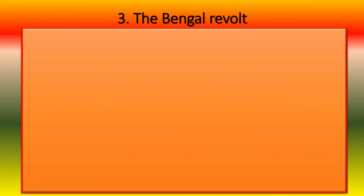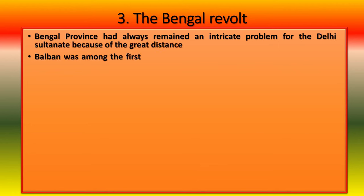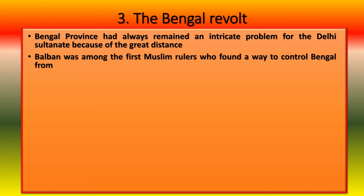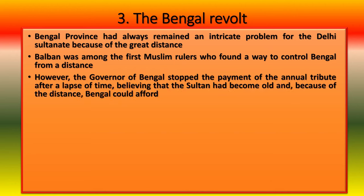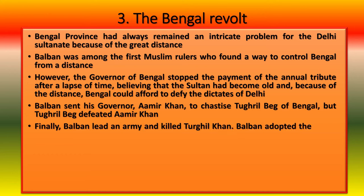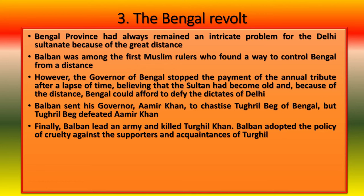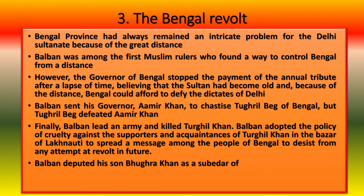Bengal had always been an intricate problem for the Delhi Sultanate due to the great distance. The governor of Bengal, Tugril Beg, stopped payment of annual tributes, believing the Sultan had grown old and the distance made defiance possible. Balban sent Amir Khan to chastise Tugril Beg, but Tugril Beg defeated him. Balban then personally led an army, killed Tugril Khan, and adopted a policy of cruelty against his supporters in the bazaars of Laknauti to deter future revolts. Balban then deputed his son Bugra Khan as subedar of Bengal.